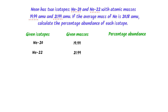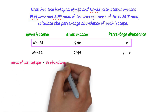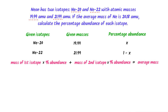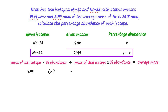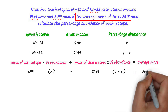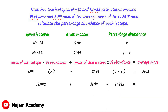I will use the previous terminology. Let the percentage abundance of Neon-20 be X and that of Neon-22 be 1 minus X. To calculate the percentage abundance, I use the formula: mass of first isotope times percentage abundance plus mass of second isotope times percentage abundance equals average mass. So 19.99 times X plus 21.99 times (1 minus X) equals 20.18 amu. After expansion, I get 19.99X plus 21.99 minus 21.99X equals 20.18.